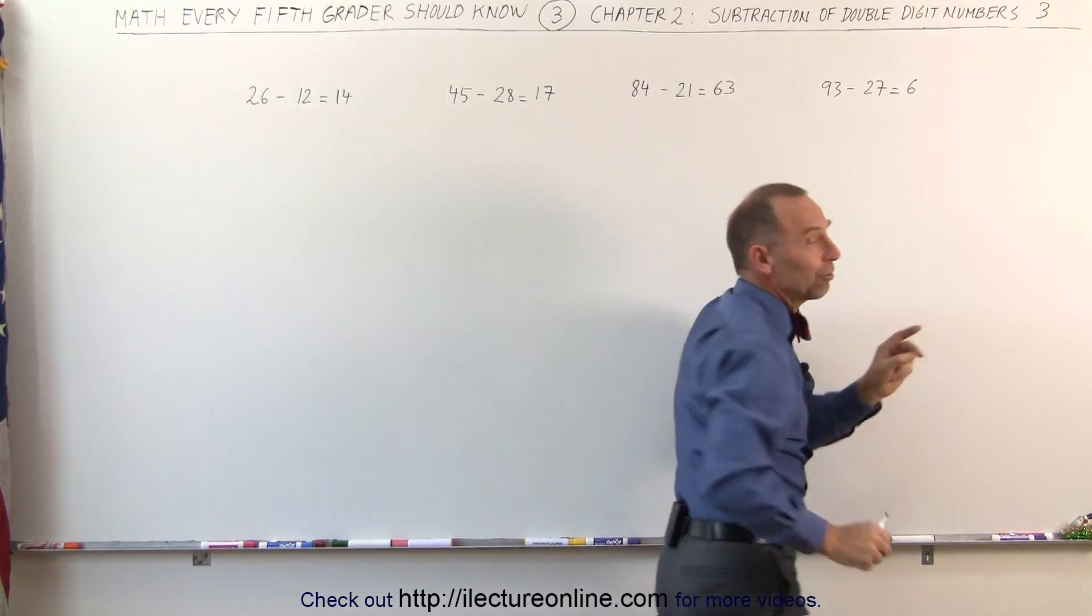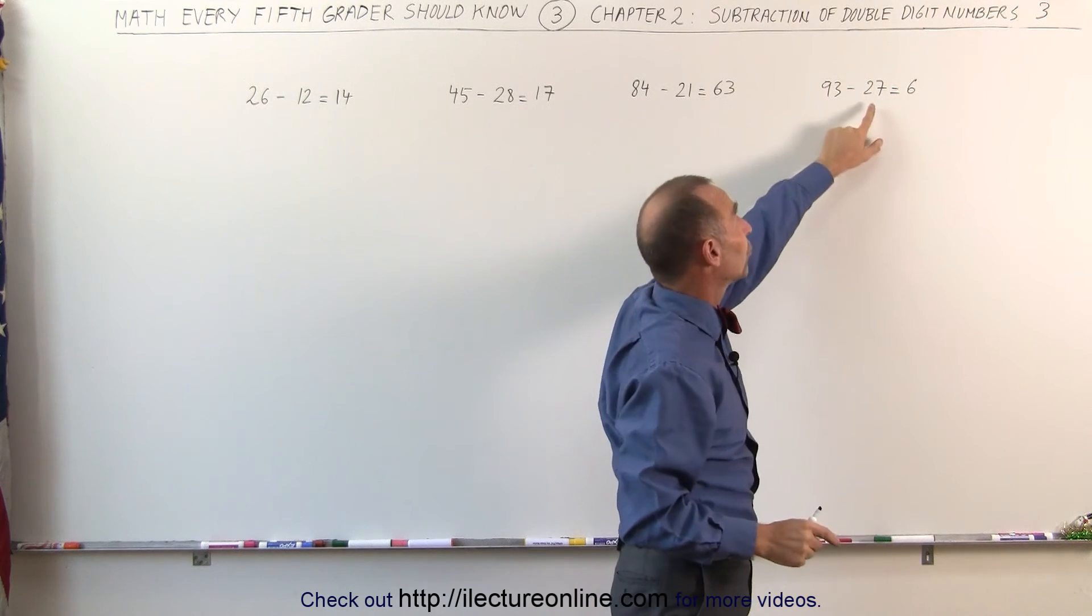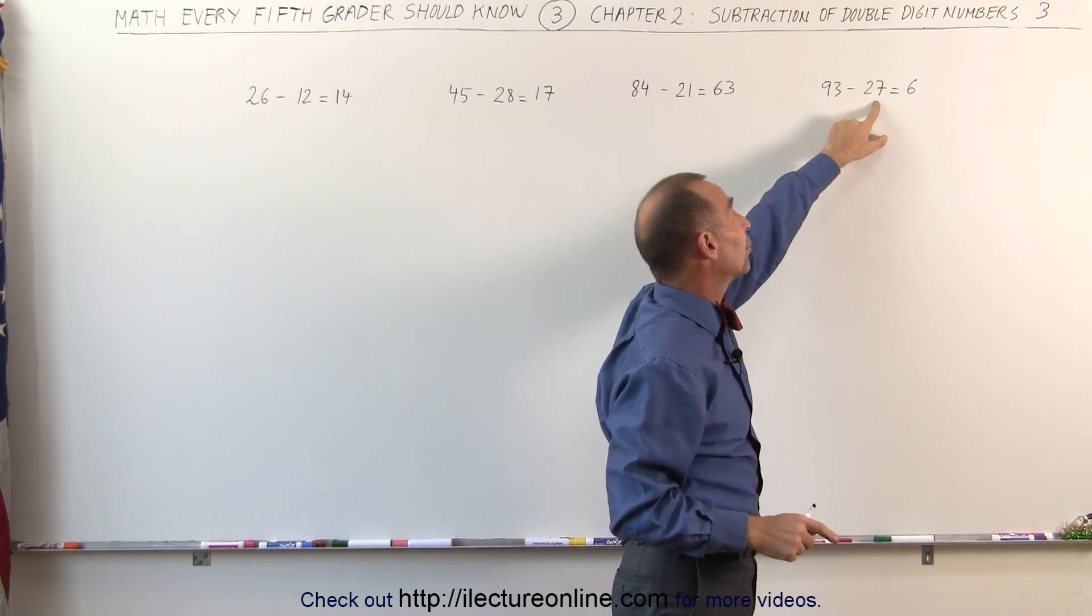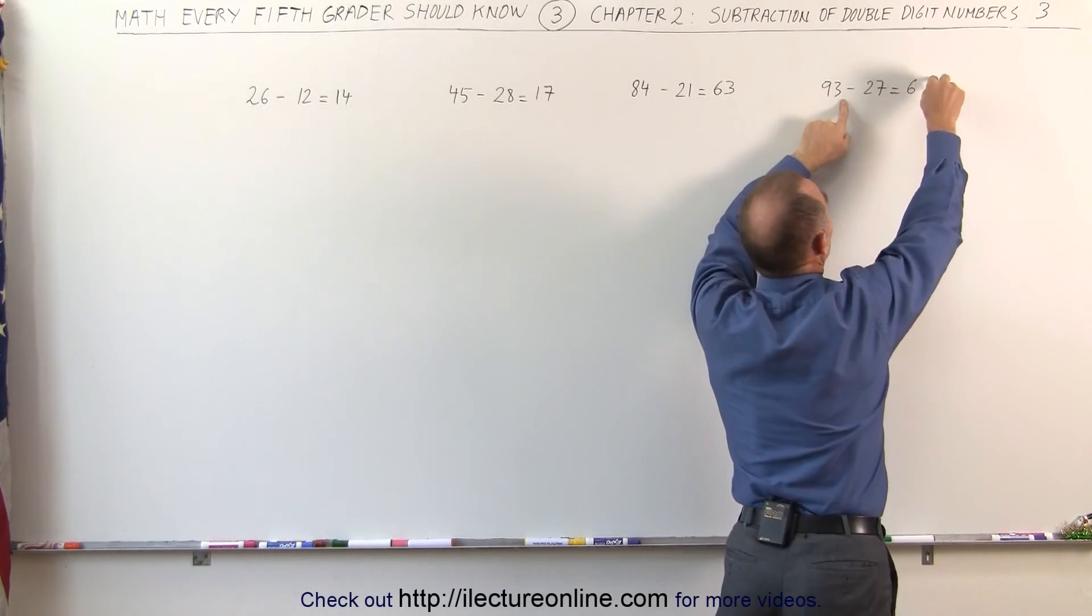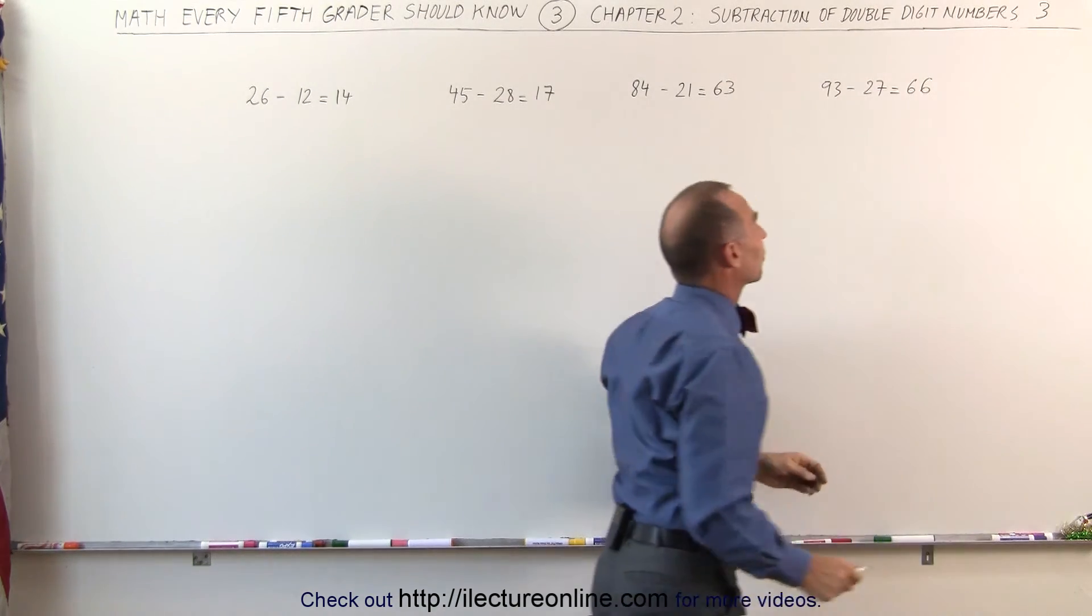But wait a minute, I subtracted 3 more than I should, because 30 is 3 bigger than 27. I add 3 more to that, and I get a 6. And the answer is 66.